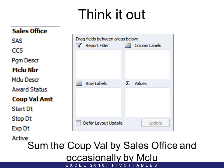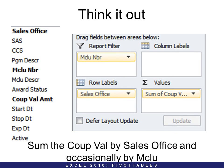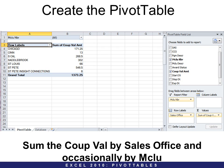So think it out before you create a pivot table — you really want to think it through. Sum the blank, by blank, and occasionally by blank. In this case, we want to sum the coupon value by sales office, and occasionally by mClue. So that means sum goes in values, coupon value is the value field, organized by sales office as the row label, and mClue as the Report Filter. And this is what that pivot table would look like.